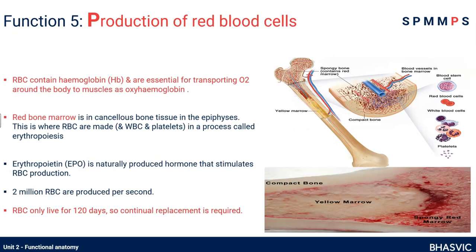Function five is blood cell production. Long bones are important for red blood cell, white blood cell, and platelet production. Red blood cells are produced in the red bone marrow, which is in the cancellous bone at the ends of long bones. Red blood cells have a relatively short lifespan — 120 days — but we need them because they contain haemoglobin, which carries oxygen in our blood and delivers it to our cells, including our muscles. They are essential for transporting oxygen, let alone playing sport, so we must continually reproduce them.